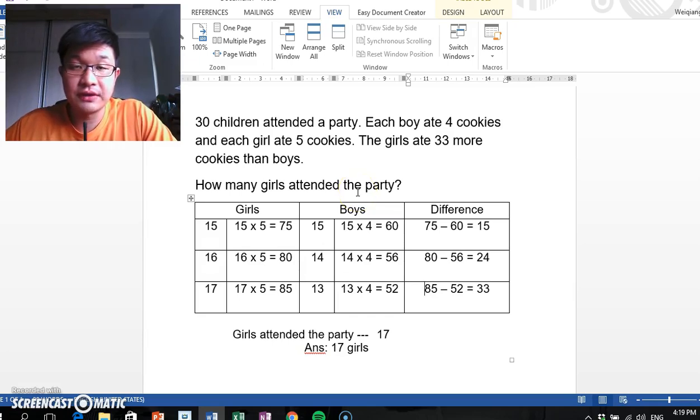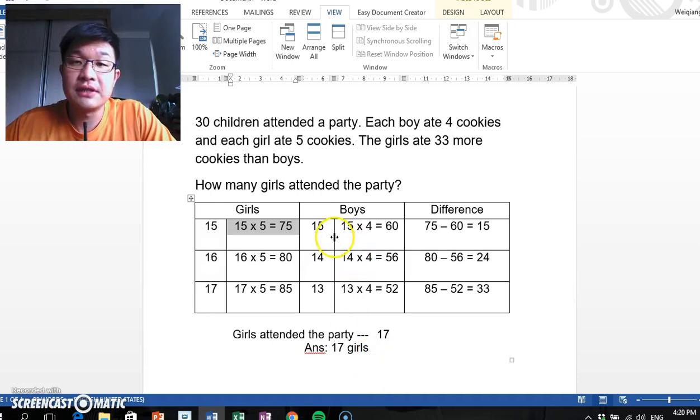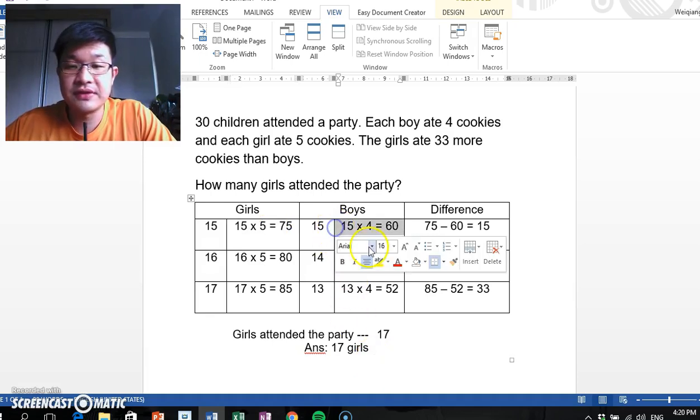There is more than one way to draw the table. If I have 30 children, why not split them half-half? So we have 15 girls and 15 boys. 15 girls would eat a total of 75 cookies, whereas 15 boys would eat a total of 60 cookies.